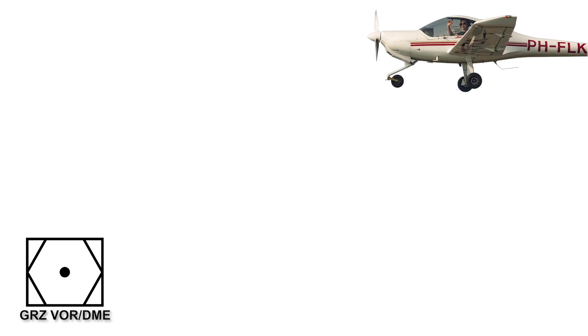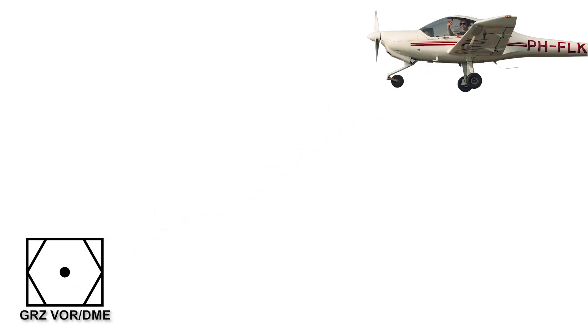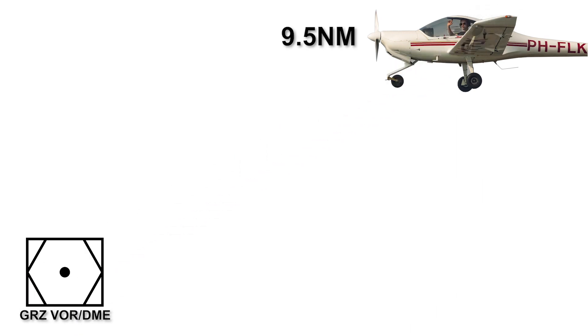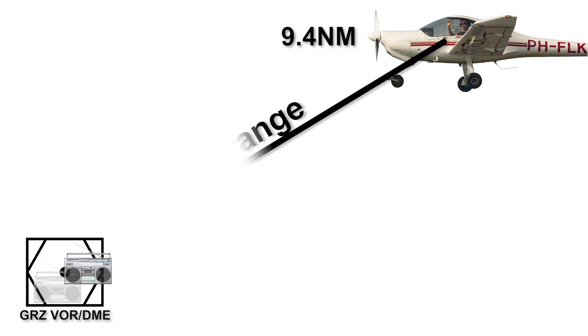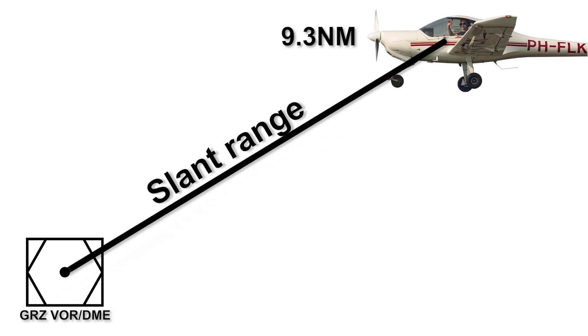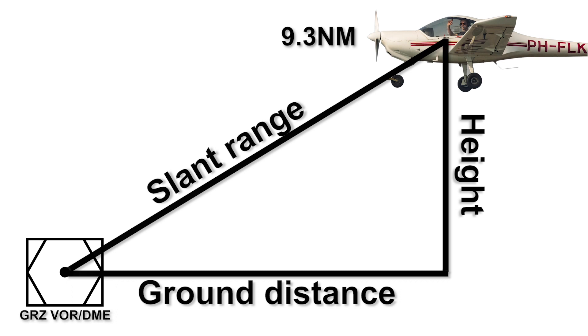A DME, or distance measuring equipment, is a type of radio navigation equipment that measures the slant range between an aircraft and the ground station. The onboard DME equipment sends out two radio pulses. When these pulses reach the DME, two pulses are sent back. By measuring the time between the moments the pulses are sent and when they are received, the distance can be calculated and displayed for the pilot. Important to understand is that it's the slant range that's measured, not the horizontal distance.